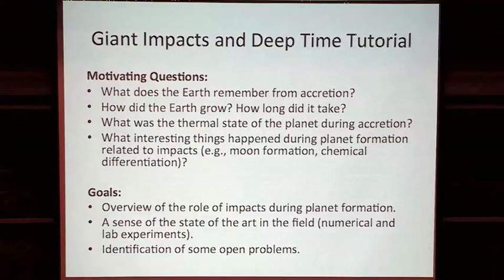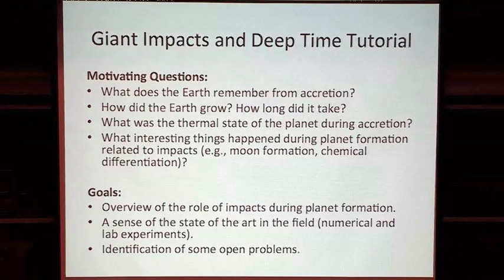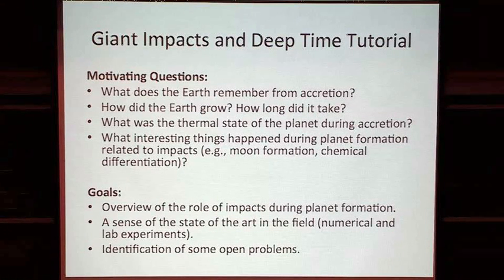We want to understand generally how the Earth formed, what the mechanism of assembly was, what the function of mass versus time is, and then we have hope of calculating the corresponding function of temperature versus time. We are interested in any particular aspects of early accretion that we can record that we see in the record today. The moon-forming impact is the largest example, and the emerging evidence for early chemical differentiation of the Earth that has been preserved today is the second aspect.